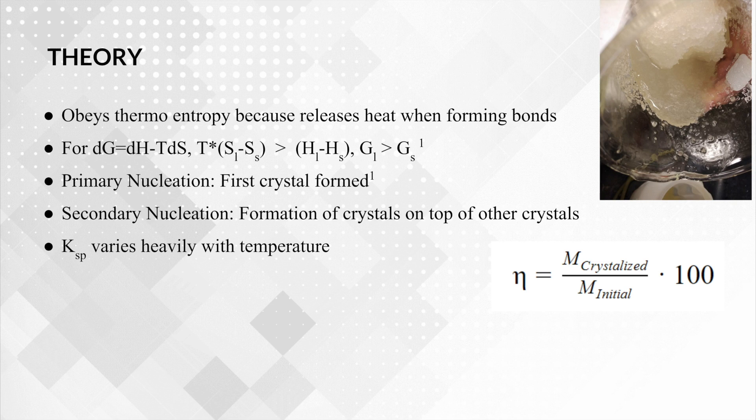If we now look at primary nucleation, primary nucleation is when the first crystal is formed in the crystallization structure. And then secondary nucleation is when the formation of crystals form on top of the already made crystals. We usually speed this up in industry by introducing a nucleation site, and in this case, a chopstick dipped in sugar to already have crystals on it, to speed up the process.